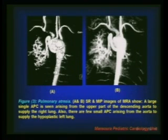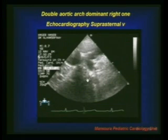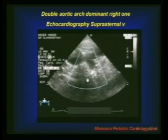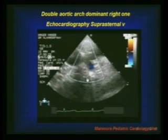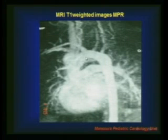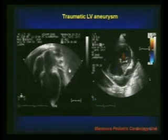Here is a patient with pulmonary atresia in which MR clearly shows absent pulmonary artery and large major aortopulmonary collaterals supplying the lungs. This is a patient diagnosed by echocardiography with a double aortic arch — the two arches are visible — and MR was used for confirmation before sending the patient to surgery. This is a nice example of how MR beautifully demonstrates the anatomy.